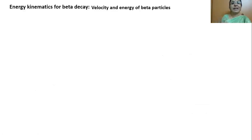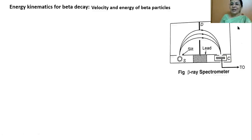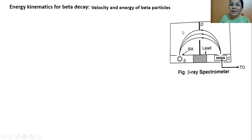Now let us discuss energy kinematics for beta decay. Beta particles are the electrons and positrons. We consider what velocity and energy these beta particles possess when coming out of the nucleus. Let us look at this diagram — this is called a spectrometer or spectrograph. The radioactive material is coated on a wire and kept here. There is a slit through which beta particles emitted from the radioactive material enter this section, where a powerful magnet is placed.